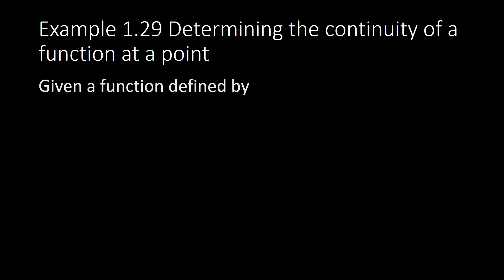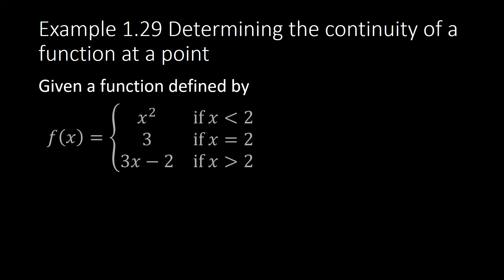Example 1.29: Determine if the function is continuous at a point, given a function defined by this piecewise expression. This is what I was talking about earlier — you cannot always rely on the graph because sometimes you don't know the graph; sometimes the function is given to you in this way. So in this case, we will use our definition of continuity at a point.